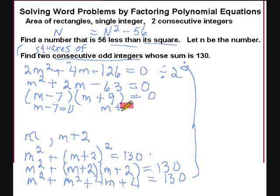Now I'm writing each factor equal to 0. And I'm going to solve. So m is 7. m is negative 9. But don't forget, we had to find two of these guys. We have the first one. We have m is 7. But what is m plus 2? m plus 2 would be 9.